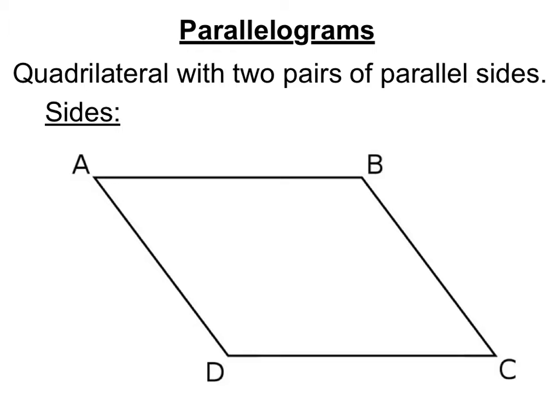First we're going to take a look at some of the special properties about the sides. In a parallelogram, opposite sides have the same length. So in other words, AB equals CD because side AB is opposite of side CD. Likewise, side BC is equal length to side AD because side BC is opposite of side AD.